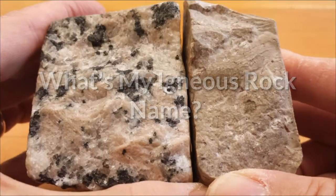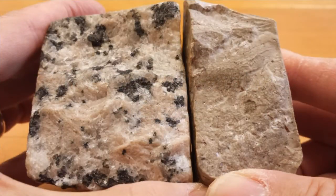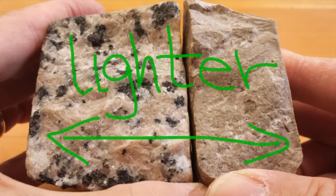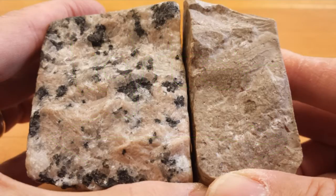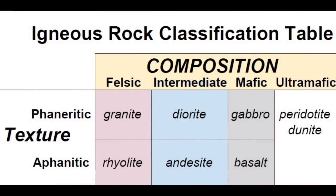Both of these rocks are lighter in tone, felsic in composition. We don't see any glassy, vesicular, or pyroclastic texture. In the igneous rock classification table, only the felsic column of rock is applicable to the samples. We need to choose between granite and rhyolite.